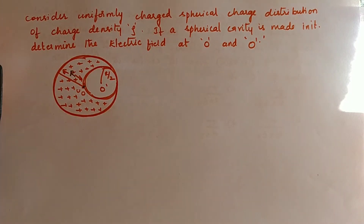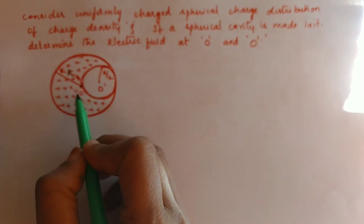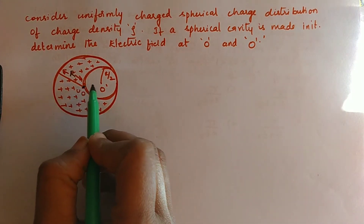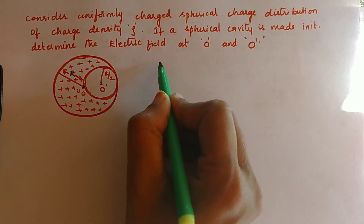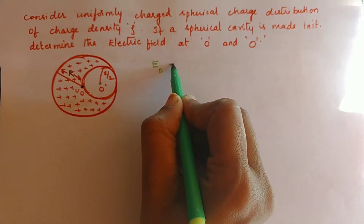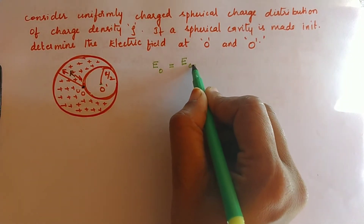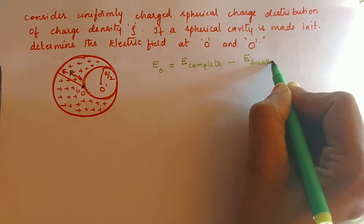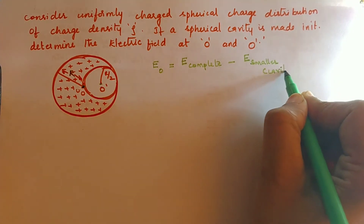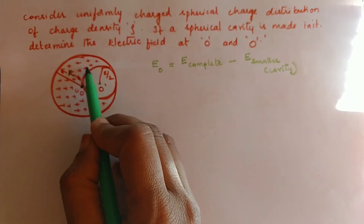In the next question, there is a spherical charge distribution with volume charge density rho and a cavity of radius r/2. We need to find the electric field at O and at O'. For any cavity problem, the field at a point equals the field due to the complete sphere minus the field produced by the cavity (the smaller sphere). This is the same approach used in gravitation.